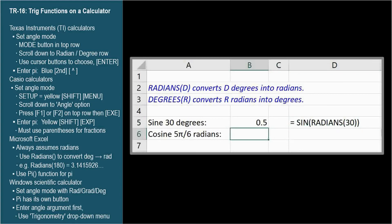For cosine 5 pi over 6, type equals, cosine, open parenthesis, 5. We need to use an explicit multiplication symbol in Excel to multiply 5 times pi, and that's the asterisk, or shift 8. Excel has a built-in function that returns the value pi, named pi.